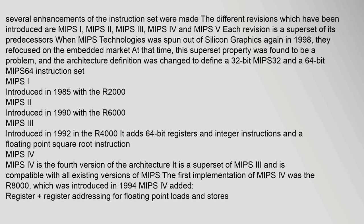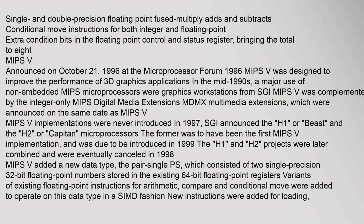MIPS-I was introduced in 1985 with the R2000. MIPS-II was introduced in 1990 with the R6000. MIPS-III was introduced in 1992 with the R4000, adding 64-bit registers, integer instructions, and a floating-point square root instruction. MIPS-IV is the fourth version, a superset of MIPS-III and compatible with all existing MIPS versions. The first MIPS-IV implementation was the R8000, introduced in 1994. MIPS-IV added register-register addressing for floating-point loads and stores.